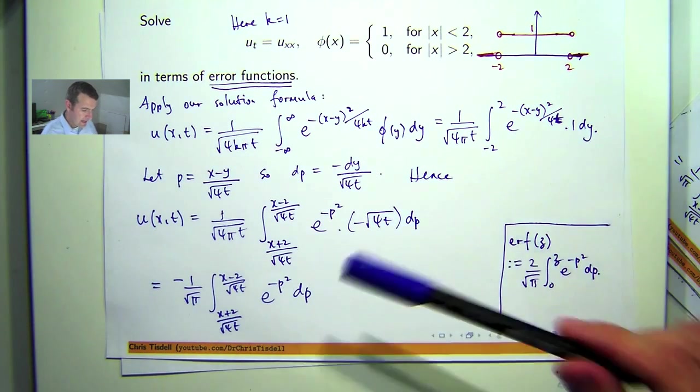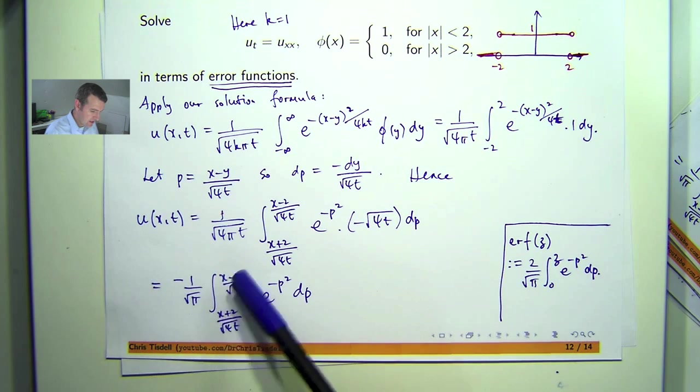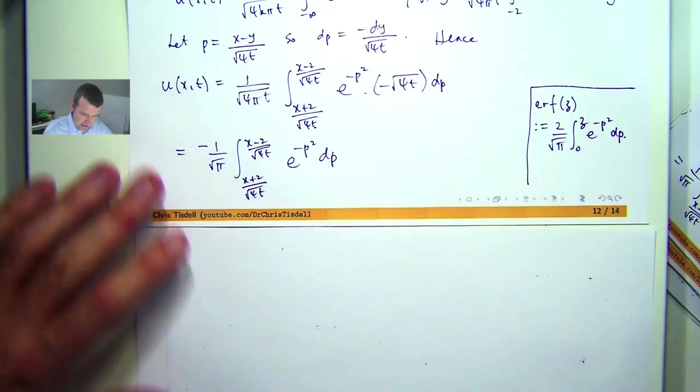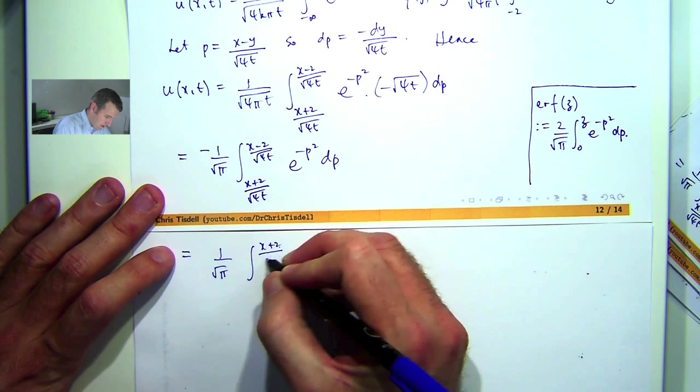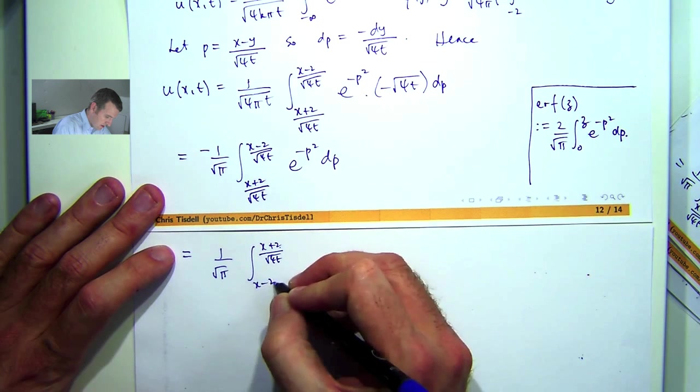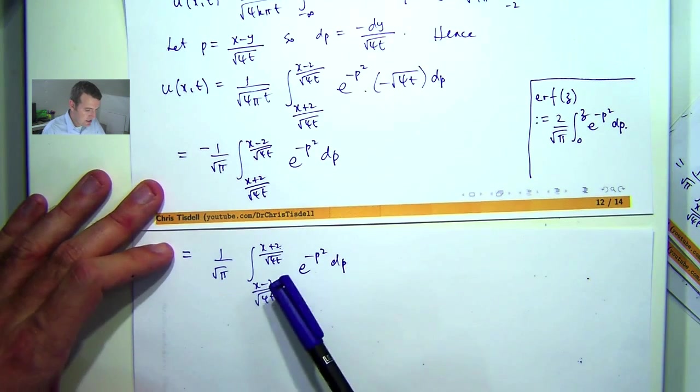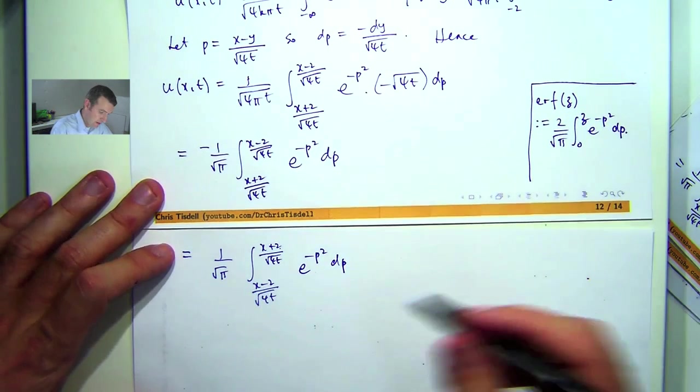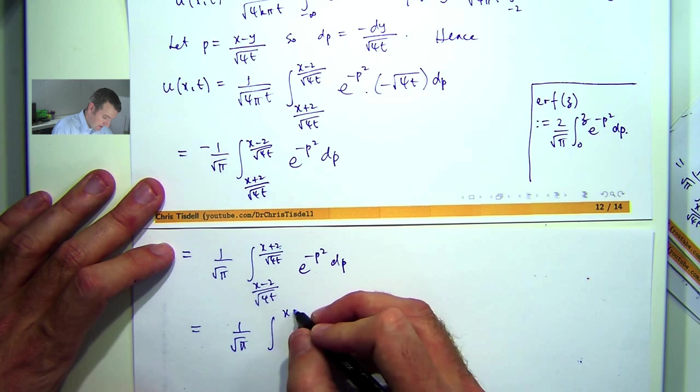So what do we have to do? Well, I would like to write this in terms of a zero here. And if I incorporate this negative sign, I can flip the limits of integration. So let's just do a little bit of cleaning up now. And what I can do is integrate, say, from this to zero and then from zero up to this, for example. That way I'll have zeros in the limits of integration.